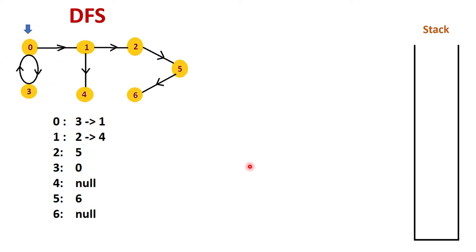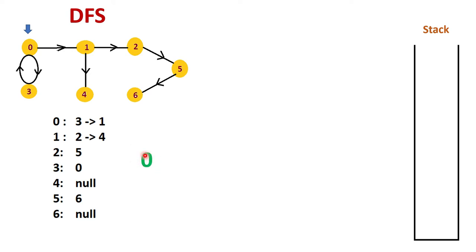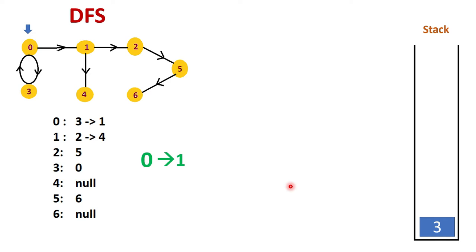Now how will we traverse in DFS manner? Suppose my starting point is zero. Whatever node we start or pick, we put it in a stack. In the next iteration I will pop from the stack and print it. So zero is there — I pop zero and print it. While printing zero I check what are the adjacent nodes of zero. Those nodes I put back in the stack — three and one are the adjacent nodes for zero, so I push three and one into the stack. In the next iteration I pop the top element, which is one, and print it. Then I check adjacent nodes for one, which are two and four, and push them into the stack.